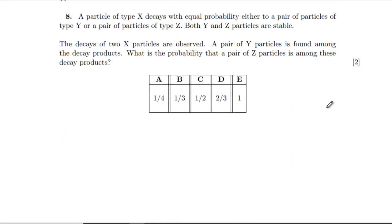Question eight: a particle type X decays with equal probability either to YY or ZZ. Both are stable. Two decays are observed. A pair of Y particles is found among the decay products. What's the probability that a pair of Z particles is among those decay? This is the old goat question. You've got four possibilities: we're either going to get a pair of Ys and then another pair of Ys, or Y then Z then Z then Y, or Z then Y, or Z then Z. But they're ruling out that bottom one. What's the chance of us getting a Z in the ones that remain? It's going to be two thirds.